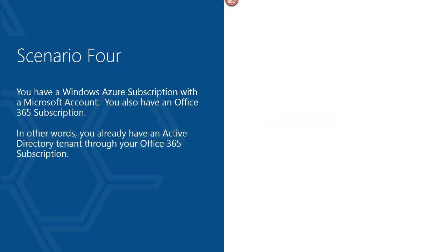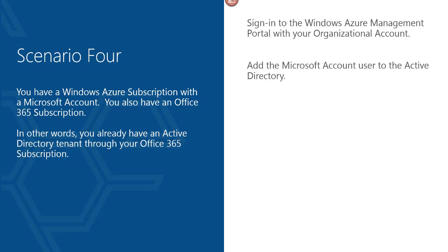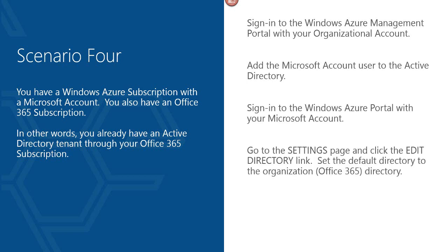The last scenario is where you have a Windows Azure subscription with a Microsoft account and also an Office 365 subscription — meaning you already have an Active Directory tenant through Office 365, but your Azure subscription uses a Microsoft account. Sign into the Azure management portal with your organizational account and add the Microsoft account user to the Active Directory. Then sign in with your Microsoft account, go to settings, click 'Edit Directory,' and set the default directory to the organization's directory, establishing a trust between the subscription and the Active Directory. Finally, add organizational accounts as co-administrators on the Windows Azure subscription as appropriate.